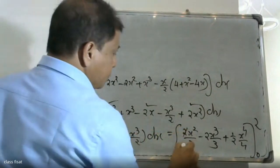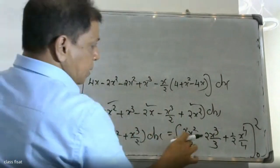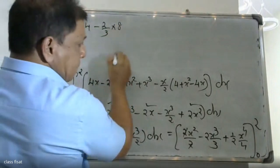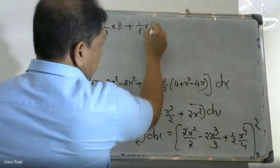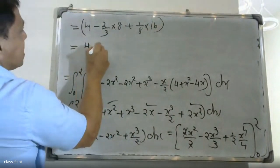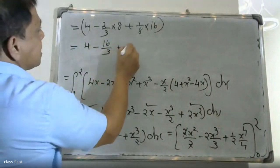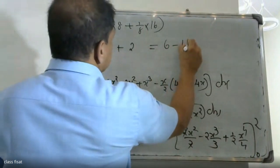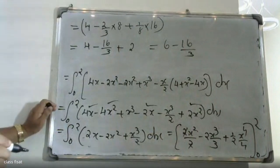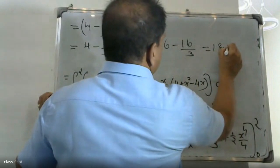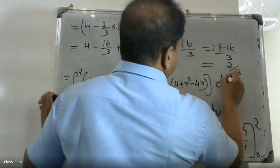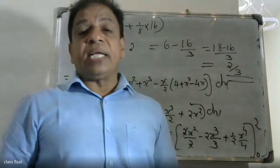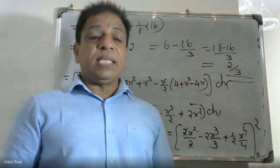Applying the limits: at x = 2, we get 4 minus (2/3)(8) plus (1/8)(16). This equals 4 minus 16/3 plus 2, giving the final answer. The flux across surface Sigma is equal to 2/3.